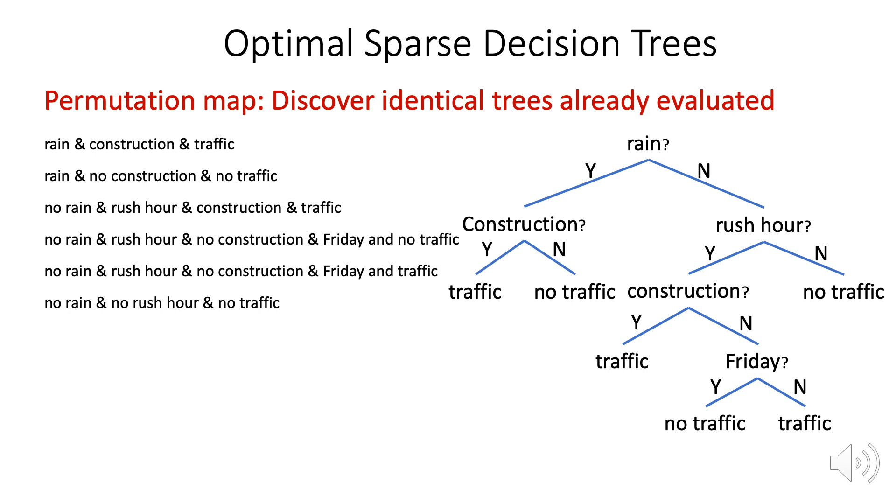We also maintain a permutation map, which lets us figure out whether we've already seen a different permutation of the leaves in a different tree that we've already explored. And we can also detect when we create a leaf we've used before and avoid recomputing the bounds for that leaf again.